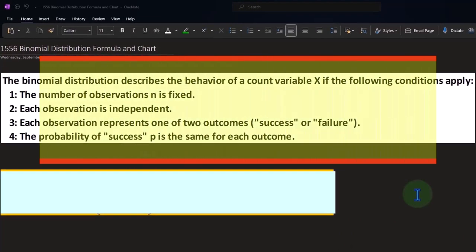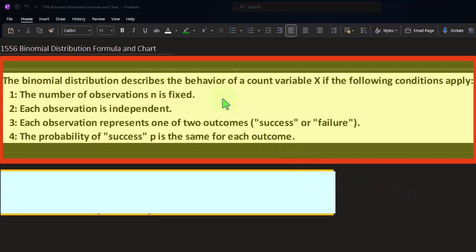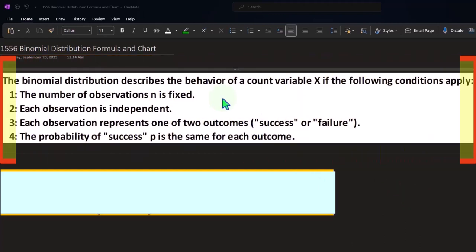The binomial distribution describes the behavior of a count variable x if the following conditions apply. Number one, the number of observations n is fixed. So we have some observations we're going to be looking at. Those observations are going to be fixed.